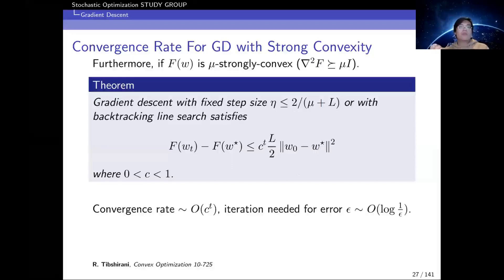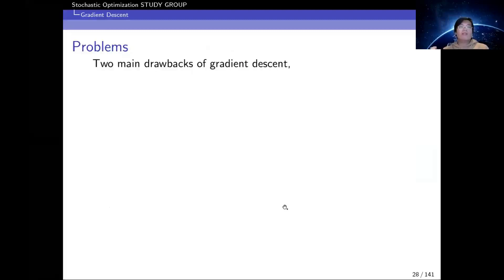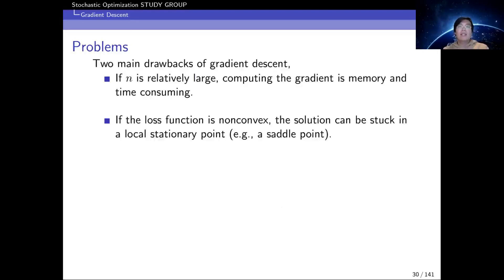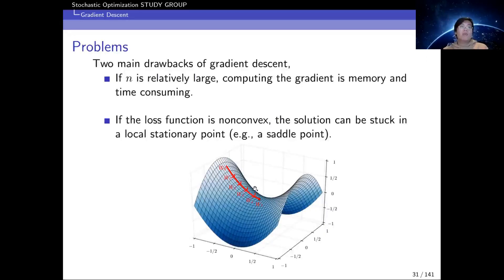Now I'll explain the drawbacks of gradient descent. There are two main ones. First, from a computational perspective, computing the full gradient over all data samples is very time and memory consuming. Second, if the loss function is non-convex, the solution can get stuck at a stationary point that is not a local minimum — for example, gradient descent can end up at a saddle point where the gradient is zero but it is neither a minimum nor maximum. To address the first problem, we introduce stochastic gradient descent.